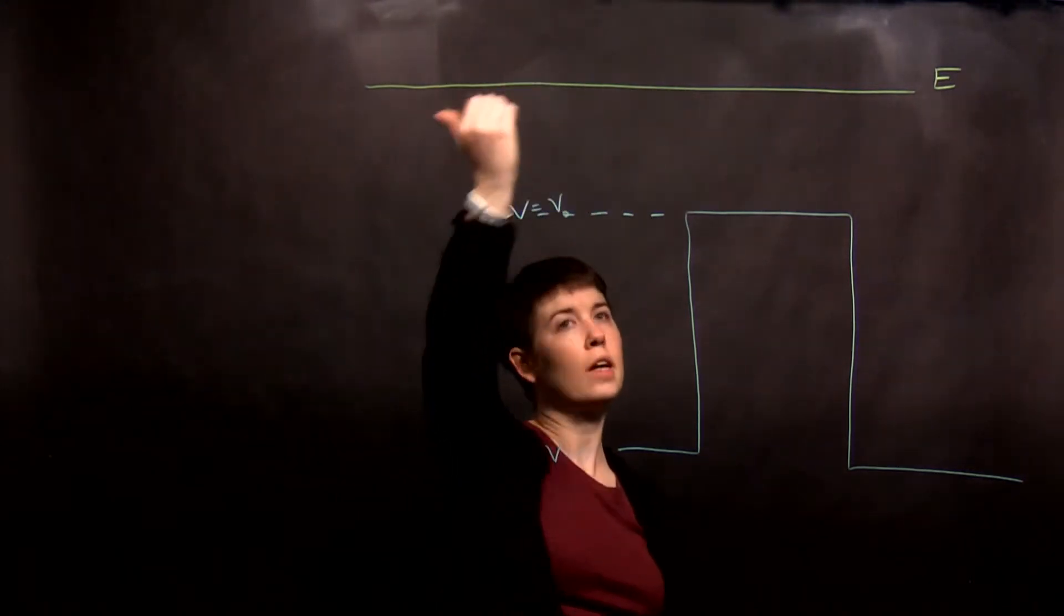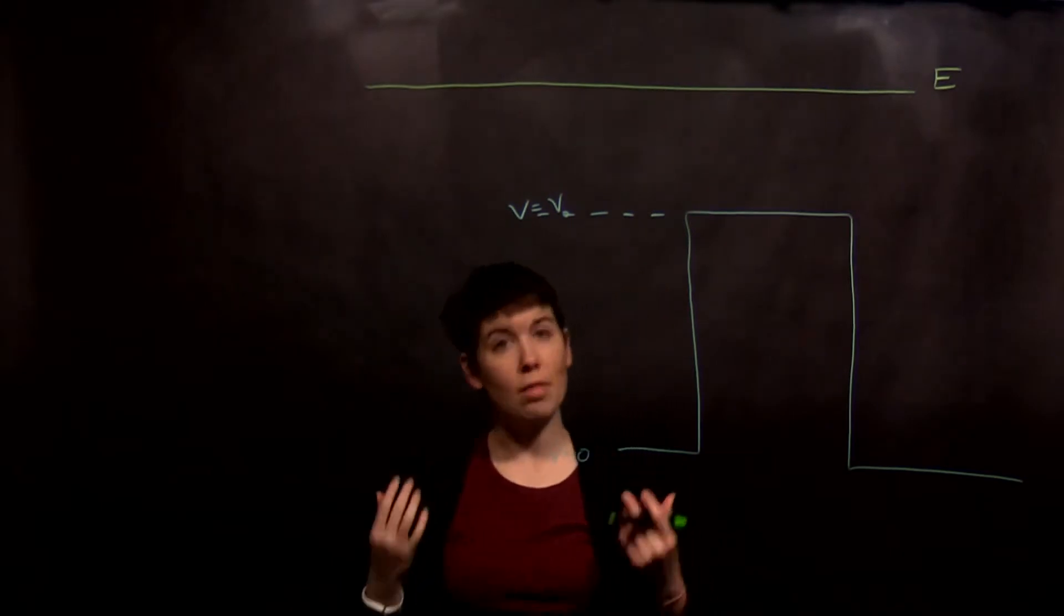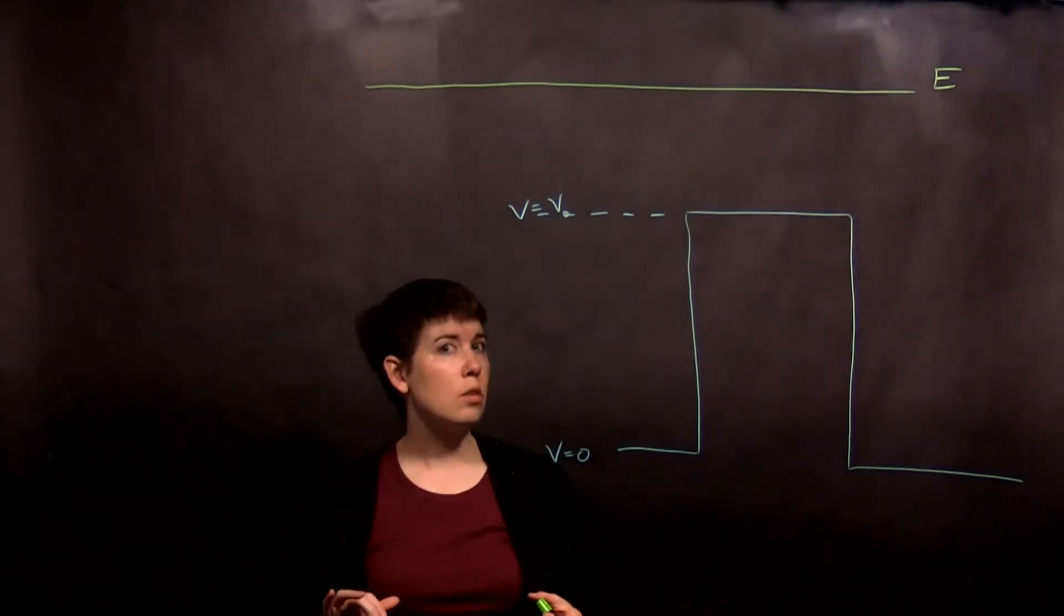You have a wave coming in, you have a wave reflecting back, you have a wave going to the right here, to the left there, and a wave going out. That's how you would mathematically set it up. So very similar to before.